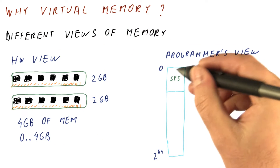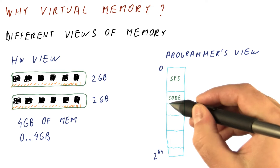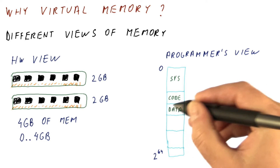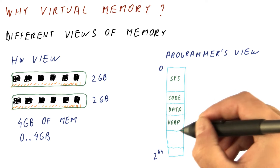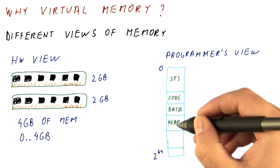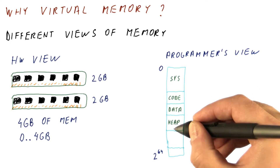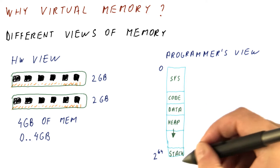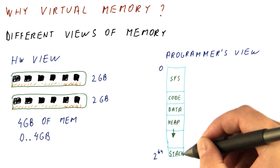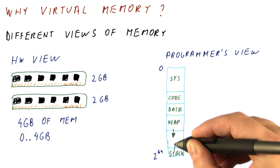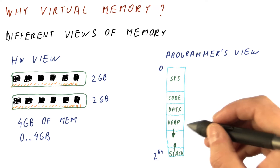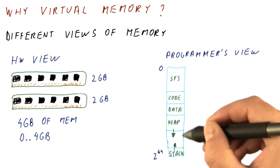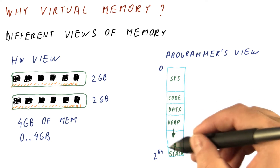Some of this memory might be reserved for the system. Some of this memory contains the actual program instructions. Some of it is for static data. Then we have the memory for the heap, which is where malloc finds its memory, and this heap can grow. And then some of it, usually very high in the memory address space, is the stack, and that typically grows this way.